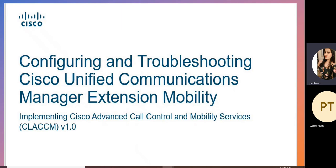There are some steps configured in extension mobility. First, we create an end user, then we associate the end user with the IP phone, then we create the phone service — the phone service that we discussed yesterday. To create the phone service, we create a URL, which is a fixed URL starting with HTTP colon slash slash.